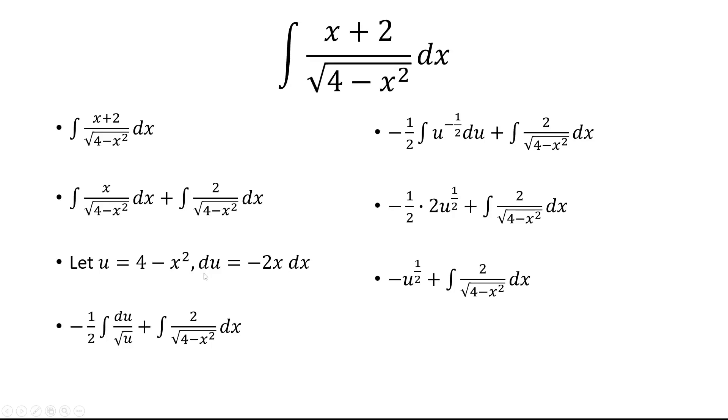u we set as 4 minus x squared, raising it to the 1 half power is just the square root, so that's going to be negative square root of 4 minus x squared.